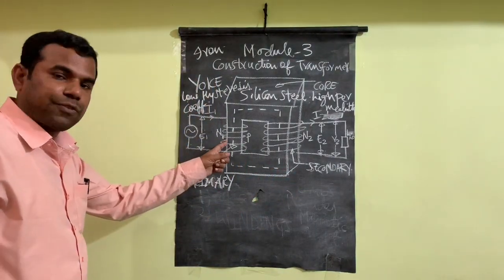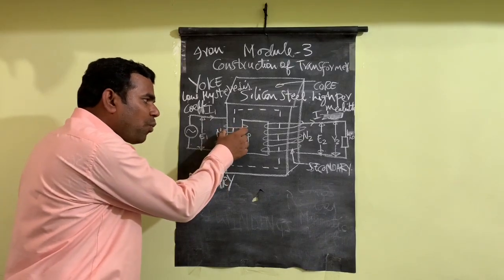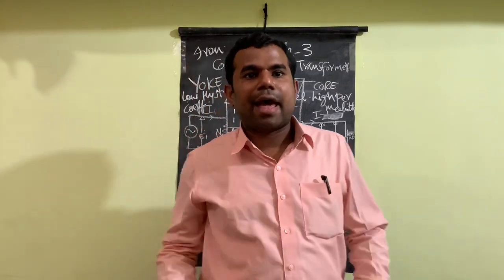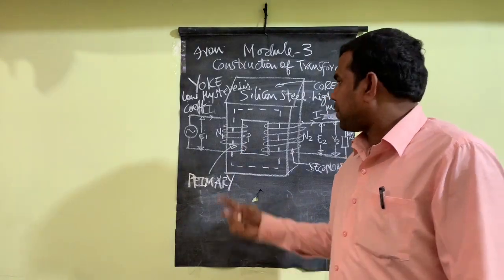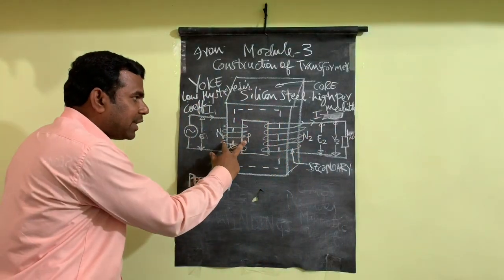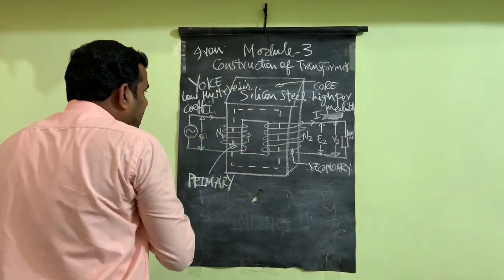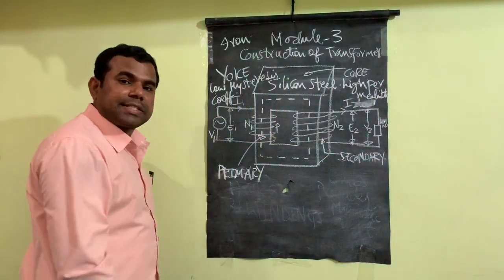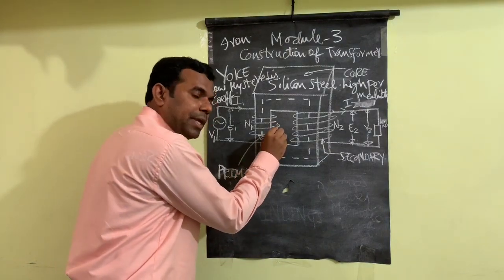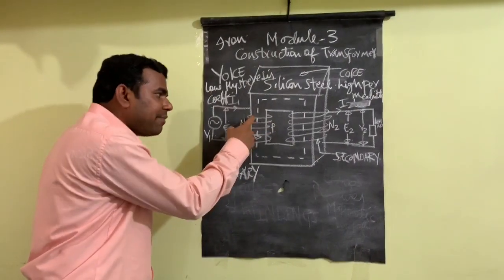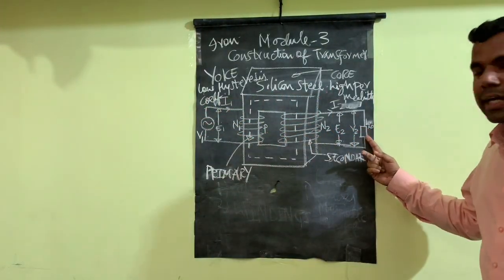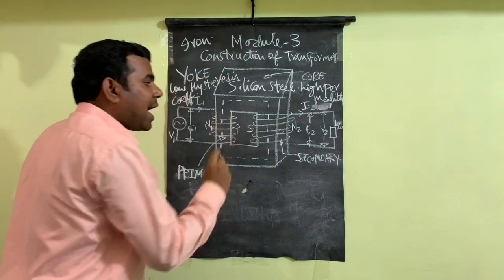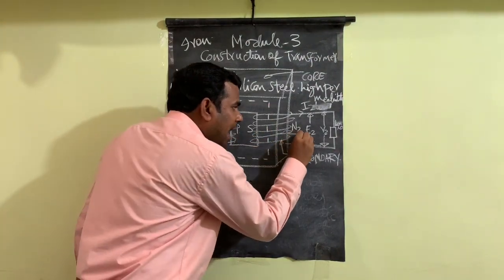The second basic part of a transformer is windings. There are two windings wound on the two limbs of the core. The winding connected to the supply side, where voltage V1 is applied, is referred to as the primary winding, denoted by P, and it has N1 number of turns. The winding connected to the load is referred to as the secondary winding, designated by S, and it has N2 number of turns.